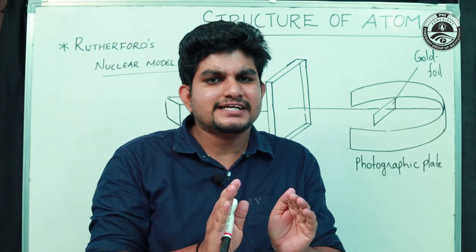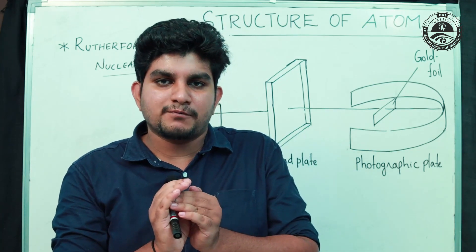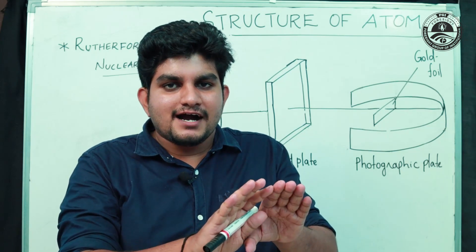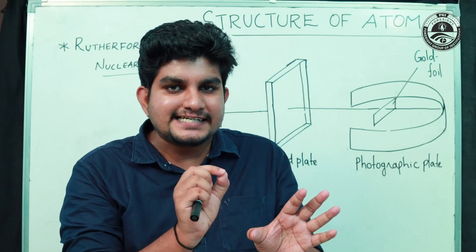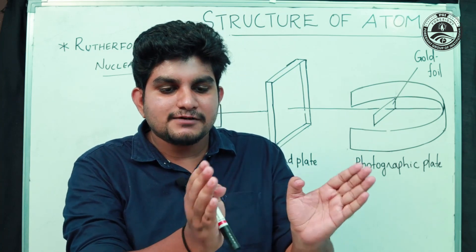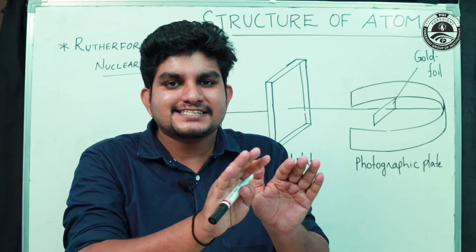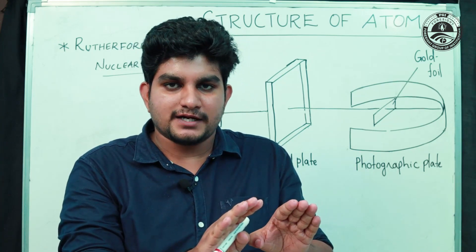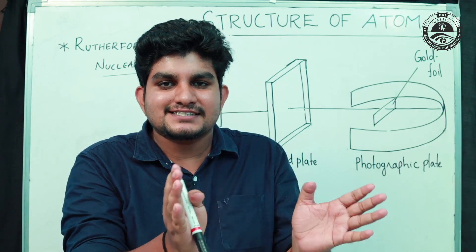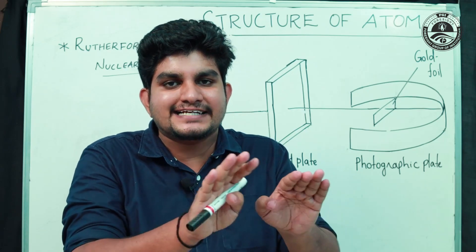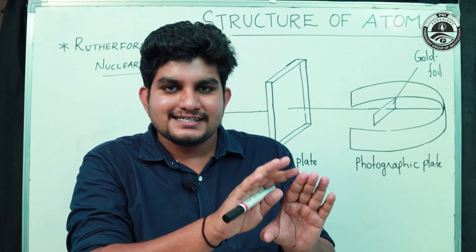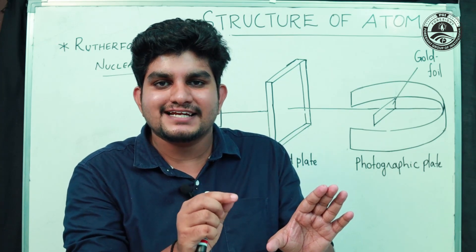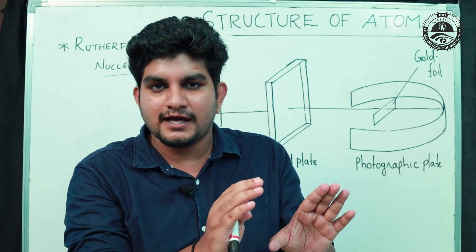Why is it called the Plum Pudding Watermelon Model? We have a watermelon with a spherical shape — that represents J.J. Thomson's spherical shape of positive charge. The seeds inside are called the negative charge, the electrons.